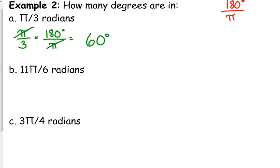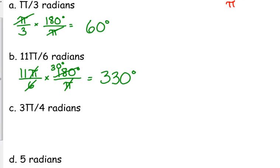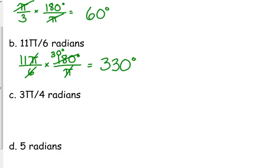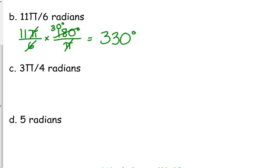Next: 11π over 6. Multiply by 180 over pi and cancel the pi's. Instead of multiplying 11 by 180, divide 180 by 6, which gives 30. Then 11 times 30 is 330 degrees. You can multiply 11 by 180 and then divide by 6 — either way works. Next is 3π over 4 — multiply by 180 over pi and the pi's cancel.